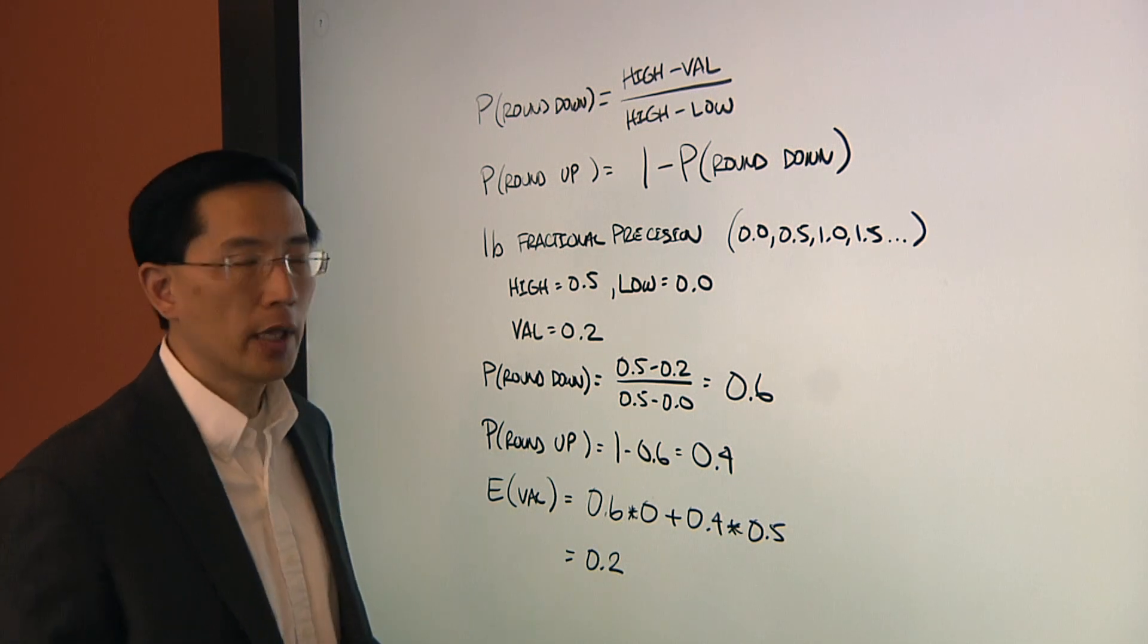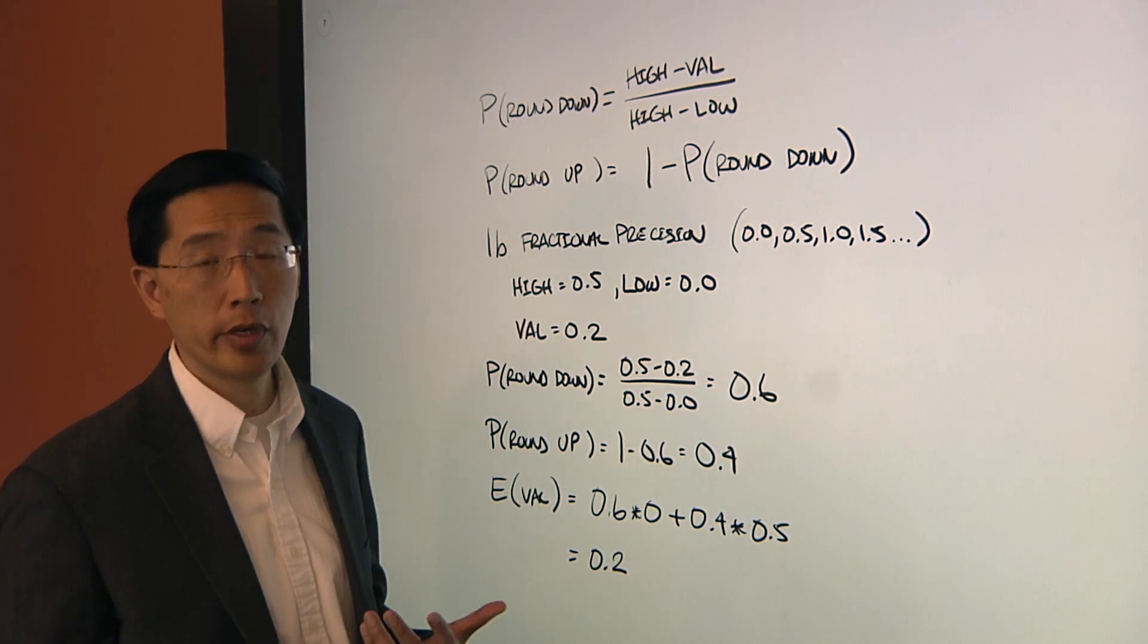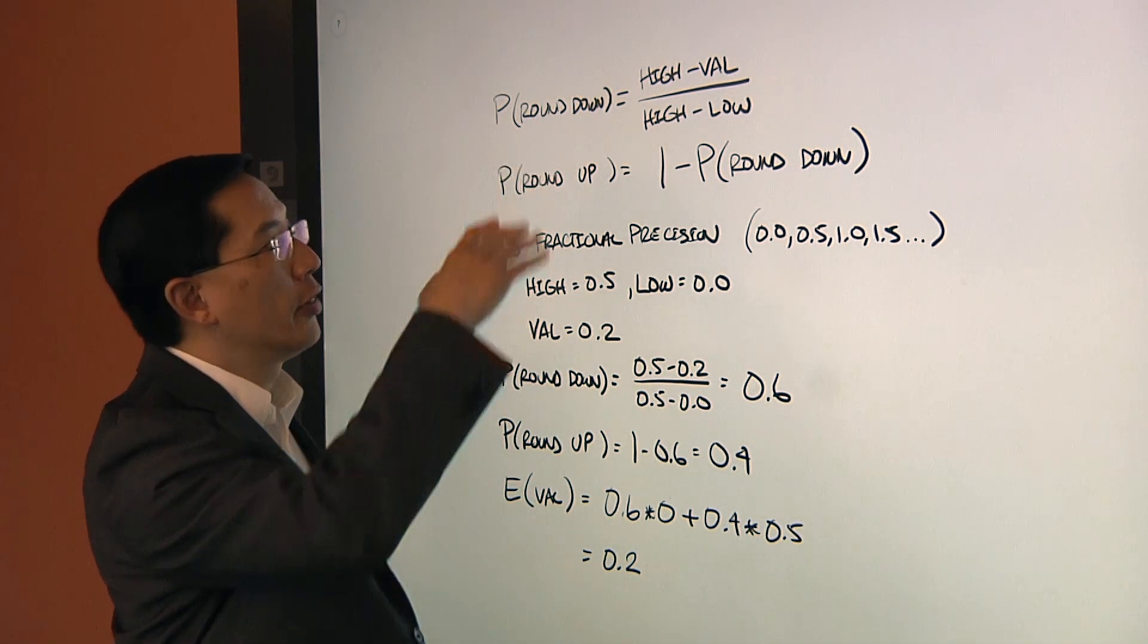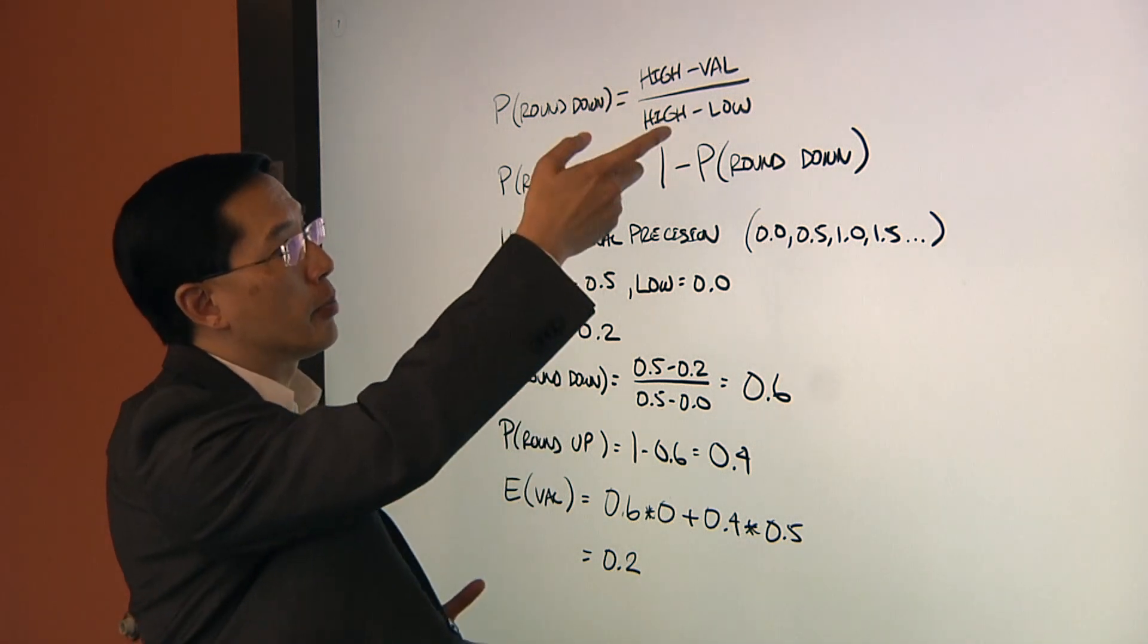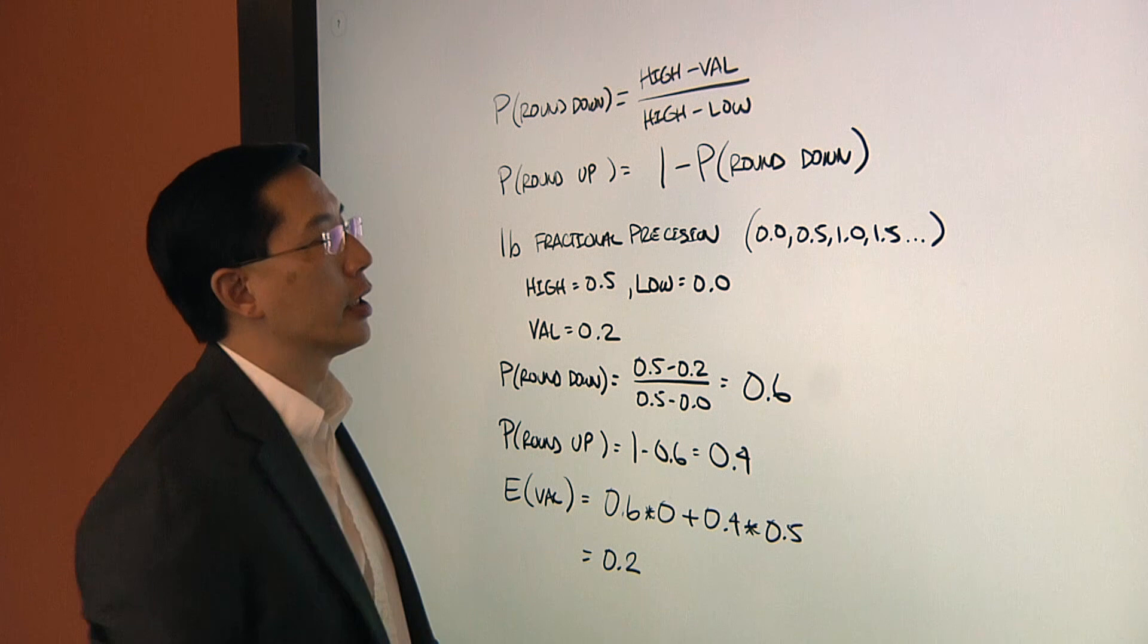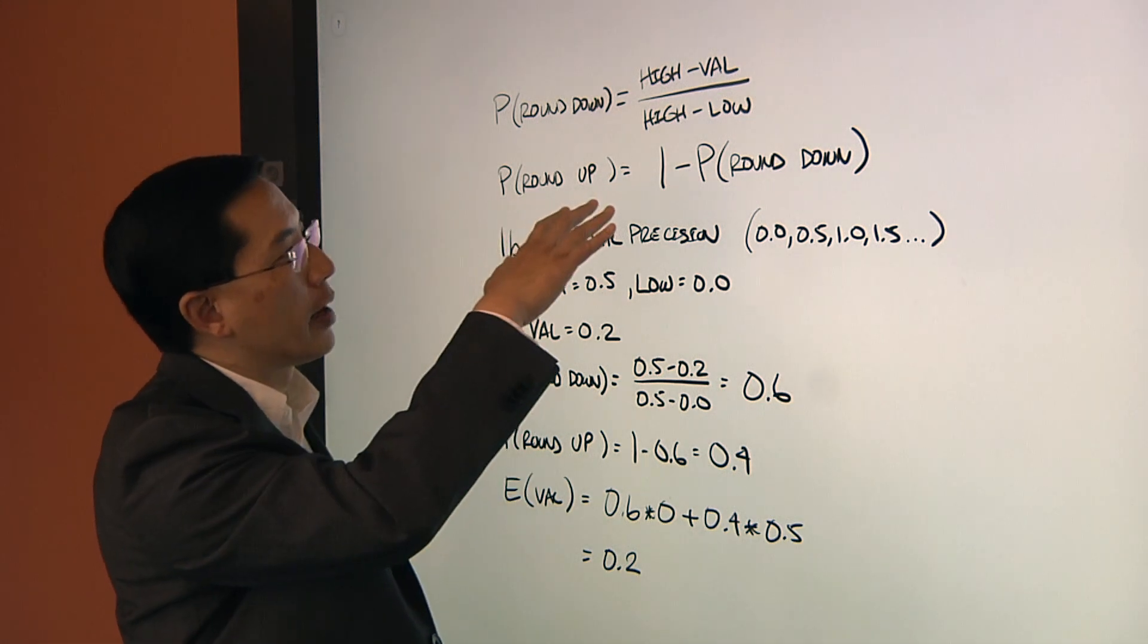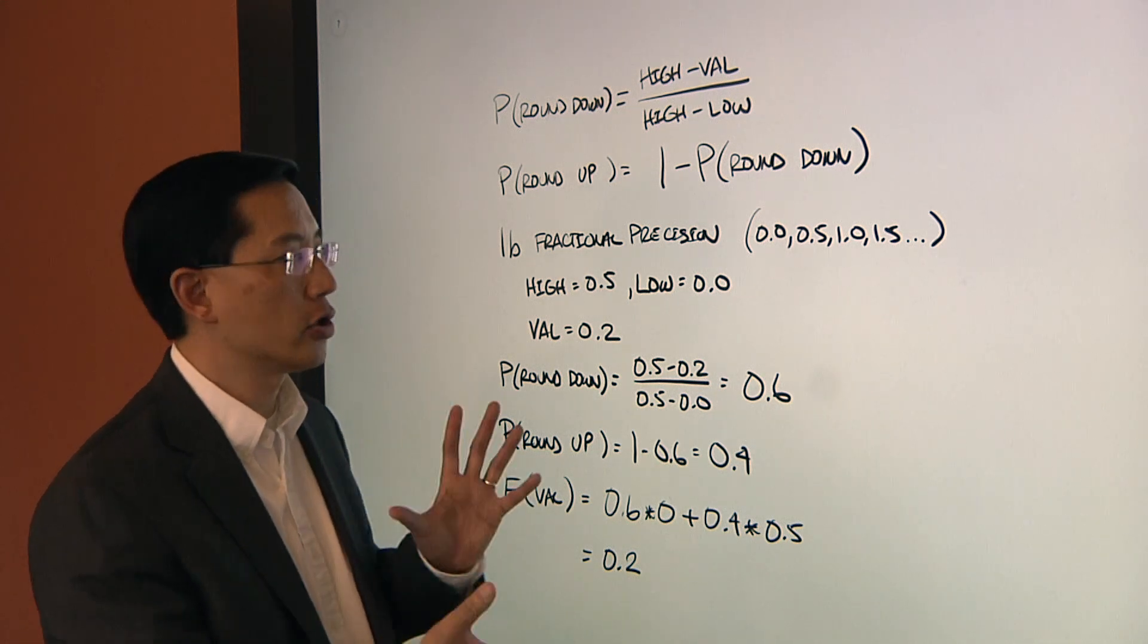So for example, in this scheme with one bit of fractional precision, again, I can only represent fractions that end in .0 or .5. But what if the number I care about is .2? What do I do? And so they developed an interesting idea called stochastic rounding where you probabilistically round up or down depending on what values you can represent and what the value of your number is. And so this example shows here the probability that I'm going to round my number down to 0 is dependent on whatever the highest value is in that fraction that I can represent, the value I'm trying to encode, and then the range between the highest and lowest values that I can encode with my fractional precision. The probability that I round that number up is just 1 minus the probability I'm rounding down.